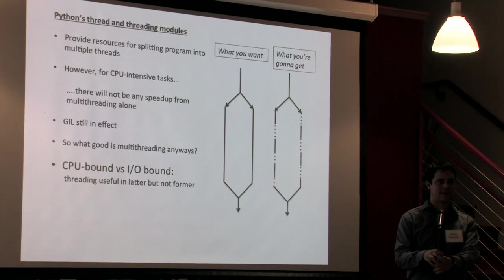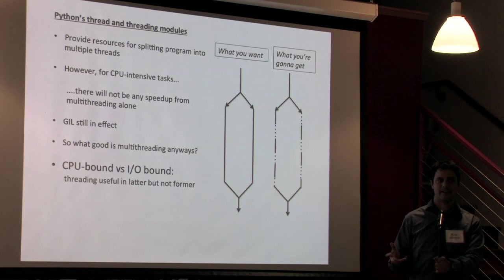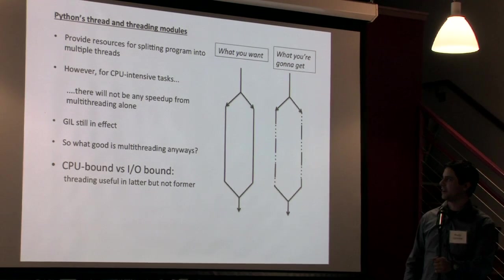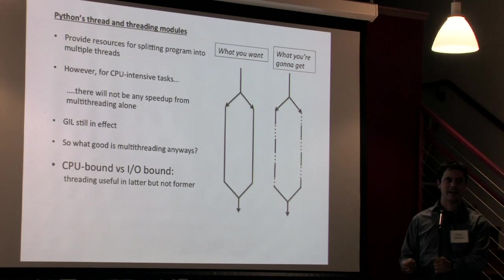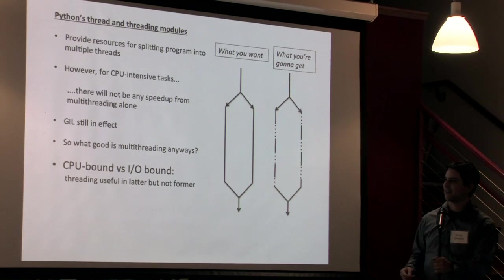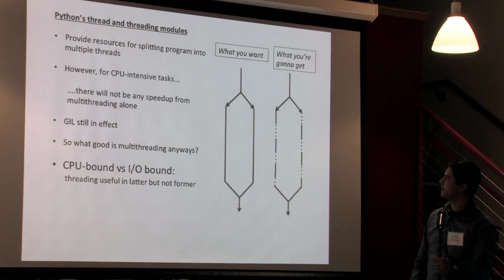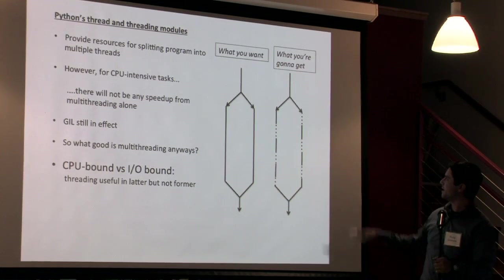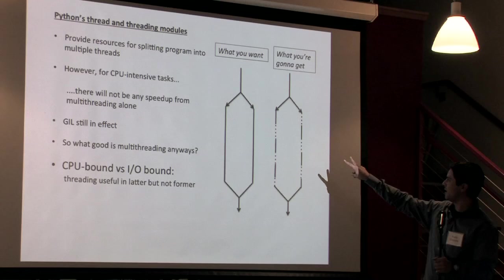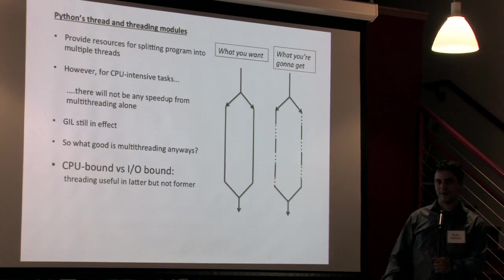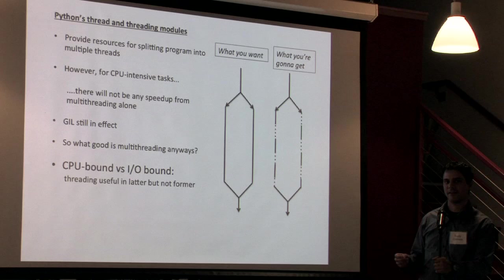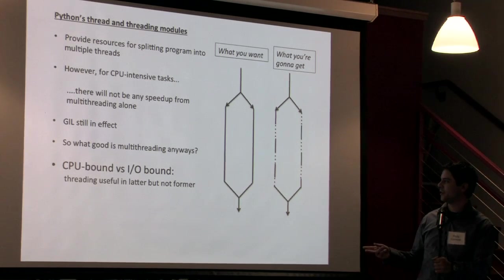However if you're doing anything that's CPU intensive or a task that is CPU bound, what you're gonna find is that there won't be any speed up for multi-threading by itself. And like I told you on the last slide the GIL is still in effect for this. So what you want to see is two processes running in parallel here. What you're actually going to find is that you have processes that are switching off between the two or more threads that you've created. So this isn't going to work for a task that's CPU intensive or CPU bound.